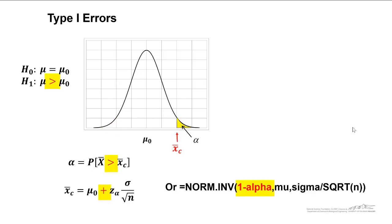We can do the same thing for an upper tailed test. In this case our critical sample average is going to be mu naught plus z alpha times sigma over square root of n, and we can use the norm.inv function but the probability is 1 minus alpha.